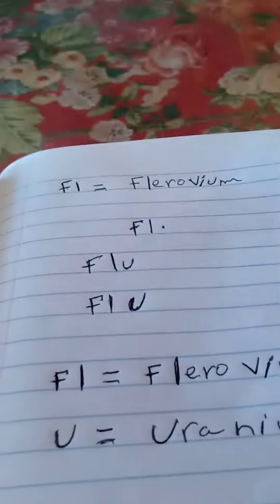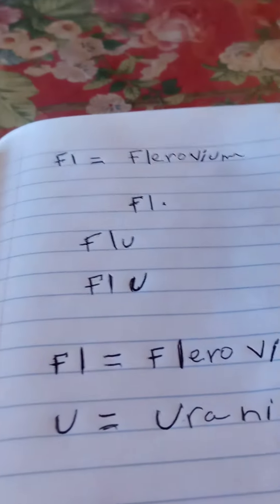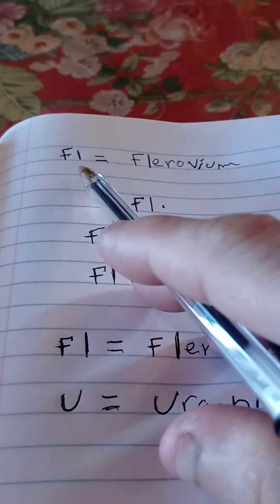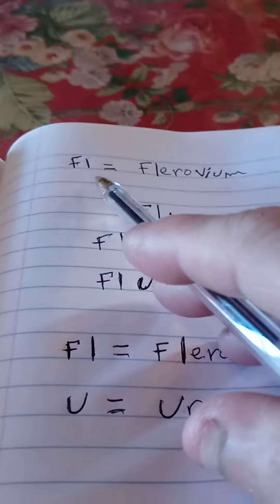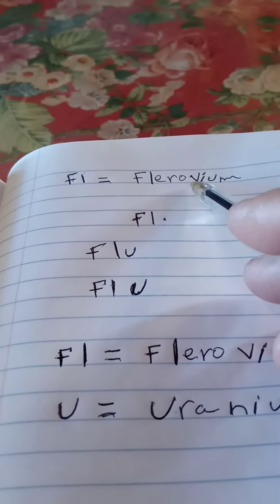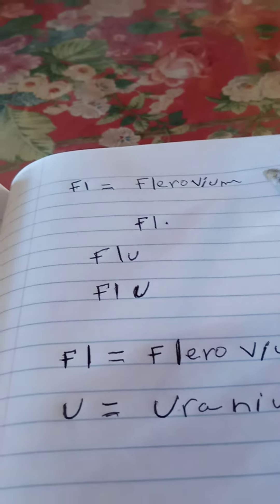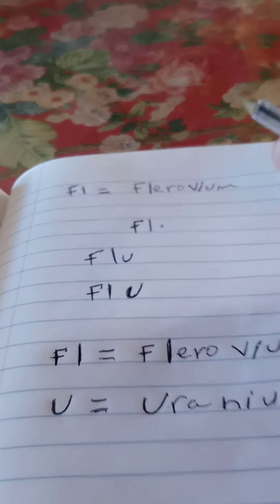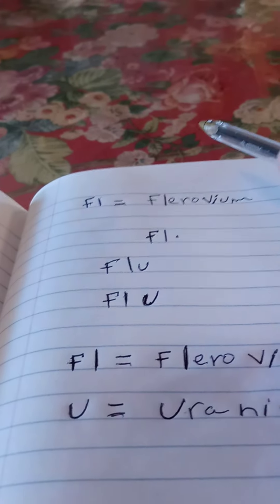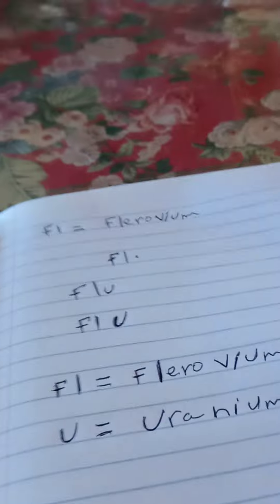I recently made a video on the chemical symbol capital F and lowercase L, which equals Fluorovium (F-L-E-R-O-V-I-U-M). I used the word fluffy, but I want to make it simpler.